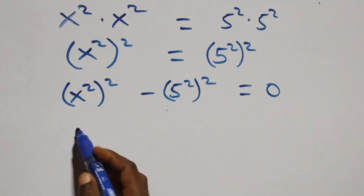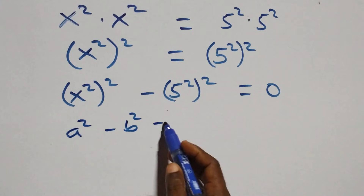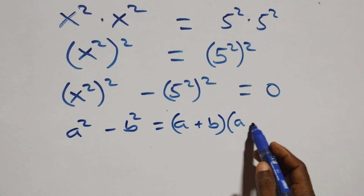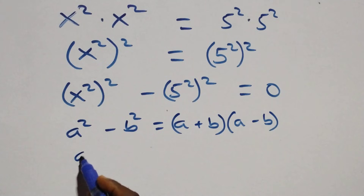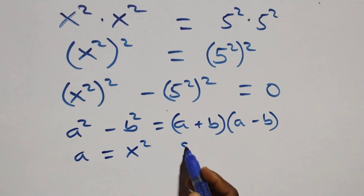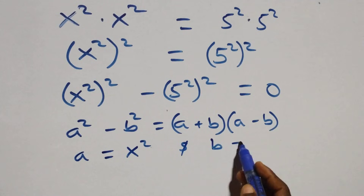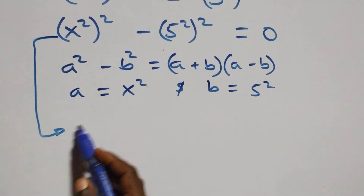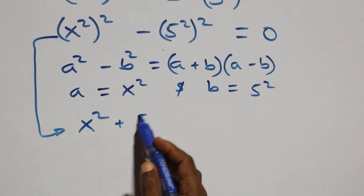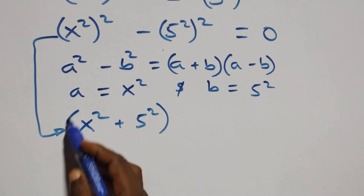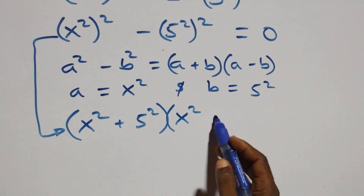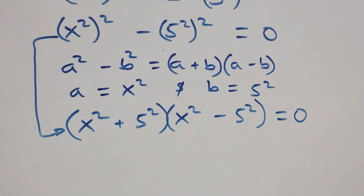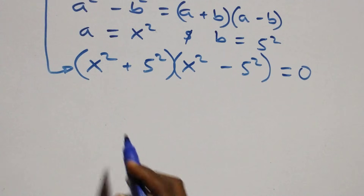This follows the difference of squares identity: a squared minus b squared equals (a + b)(a - b). Here a stands as x squared and b stands as five squared, so what we have becomes (x squared + five squared)(x squared minus five squared) equals zero.